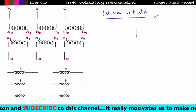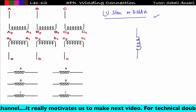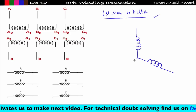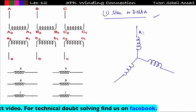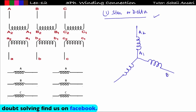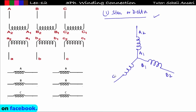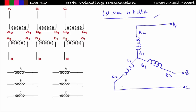Let us make a star connection. We arrange three phases: A2, A1 for the first phase; B2, B1 for the second phase; and C2, C1 for the third phase. We take supply from A2, B2, and C2. According to British convention, supply is taken from A2, though you can take it from A1 as well.